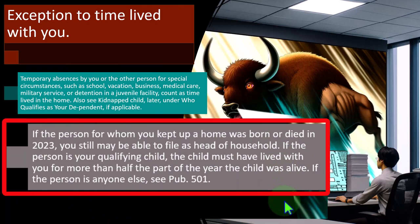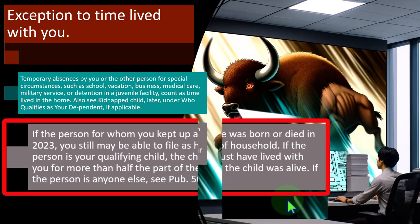If the person for whom you kept up a home was born or died in 2023, you may still be able to file as head of household. If the person is your qualifying child, the child must have lived with you for more than half the part of the year the child was alive. If the person is anyone else, see Publication 501.